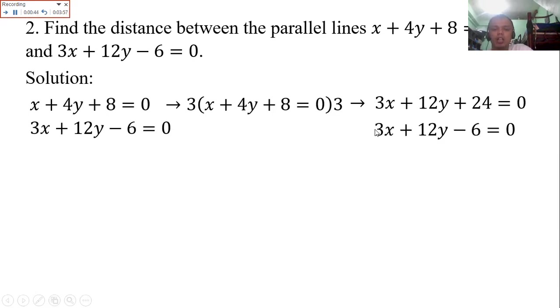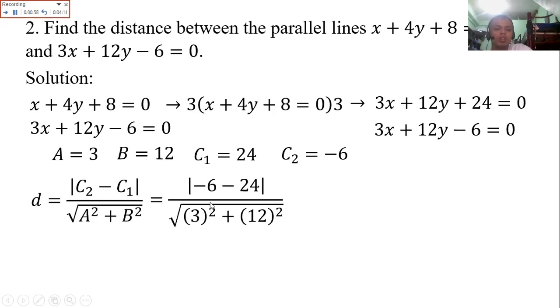Now let's see, are they the same? Same 3x, same 12y. They only differ here. Your A here is 3, your B is 12, your C sub 1 is 24 now, C sub 2 is negative 6. Substitute. We have negative 6 minus 24, all over by your A is 3 squared, plus your B is 12, so we have 12 squared. Negative 6 minus 24 is negative 30, over 3 squared is 9, 12 squared is 144. The absolute value of negative 30 is 30. 9 plus 144 is 153.